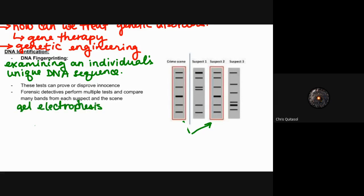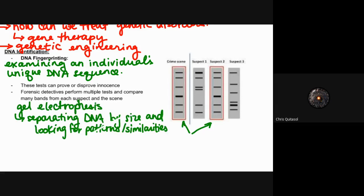Gel electrophoresis is a way to separate DNA by size and look for specific patterns or similarities. Again, just like that DNA fingerprinting, this allows for that to happen.